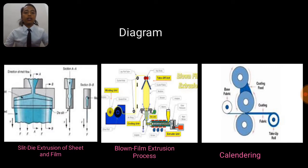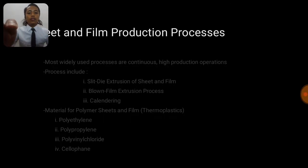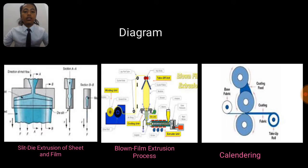This is the diagram of three methods. The first one is the slit die extrusion of sheets and film. The second diagram is the blown film extrusion process and the third one is the calendaring process.